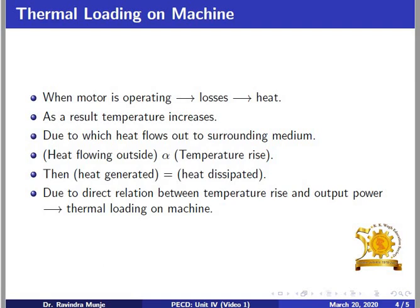This increases the temperature of the machine. As the temperature of the machine increases beyond ambient temperature, heat flows out to the surrounding medium. The heat flowing outside to the surrounding medium is directly proportional to the temperature rise in the motor above ambient value. As motor temperature rises, heat outflow increases and equilibrium is set — meaning the heat generated is equal to heat dissipated. The motor temperature then reaches a constant value or steady state value.